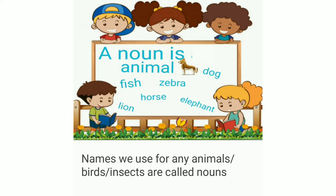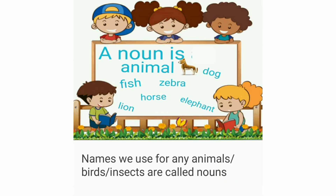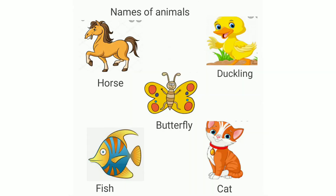Nouns are also naming words for animals. The naming words we give for certain animals, insects, and birds are also called nouns. For example, fish, zebra, dog — we assign a particular name to a particular animal or species, and that is a noun. When we see the picture of a horse, we call it a horse, so horse is a naming word and therefore a noun.